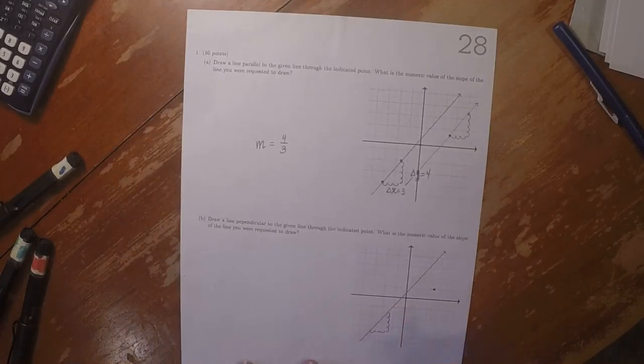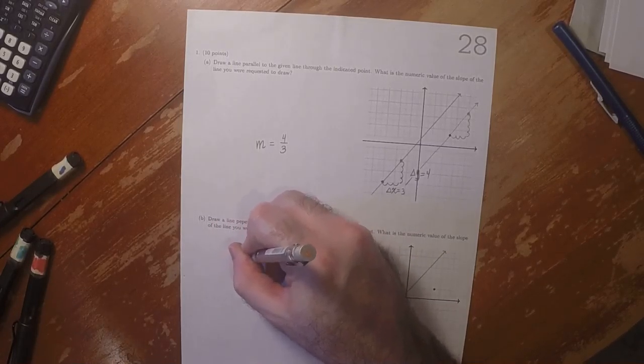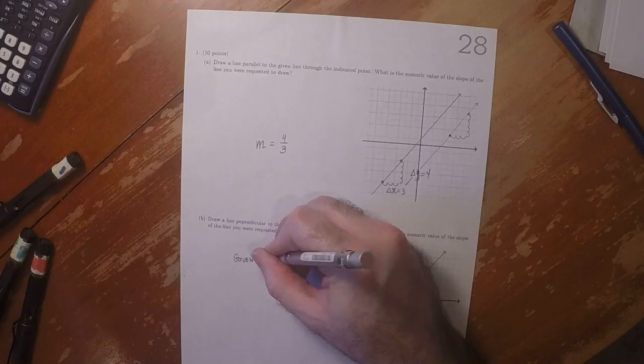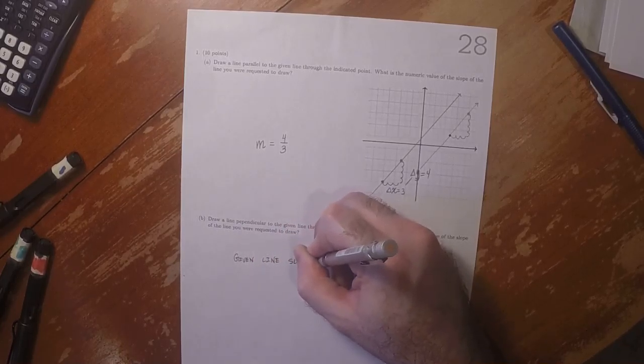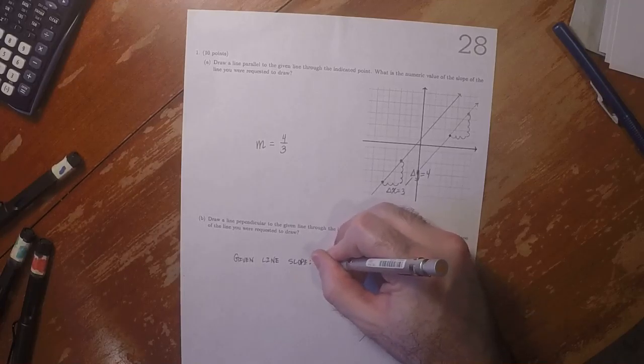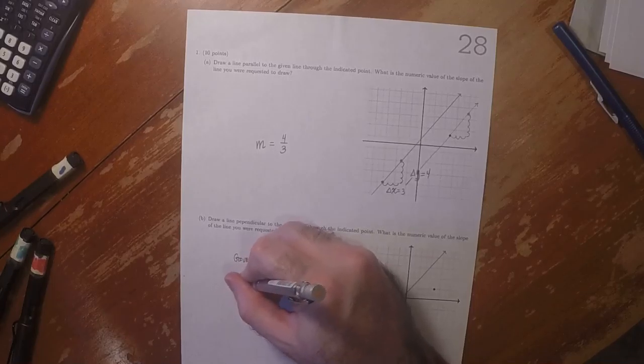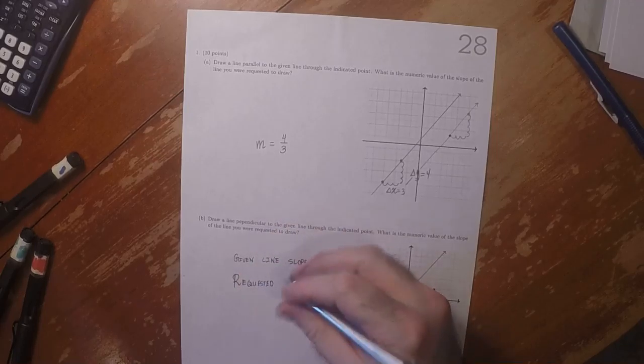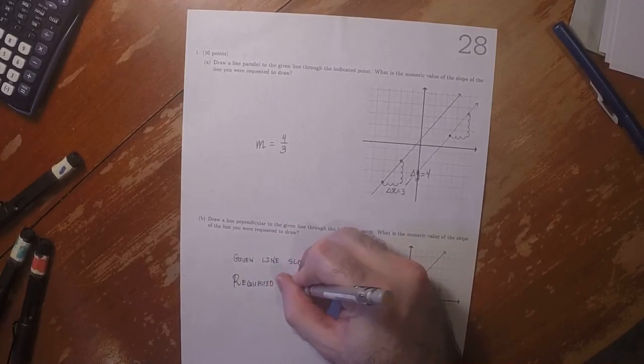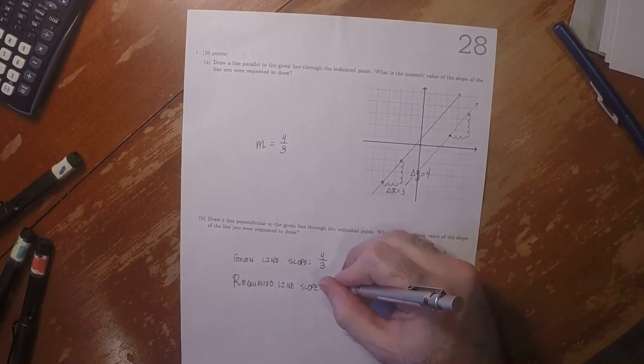So that means that because the slope of the given line is four over three, that means the slope of the requested line, which is perpendicular, is the negative reciprocal of that, so negative three over four.